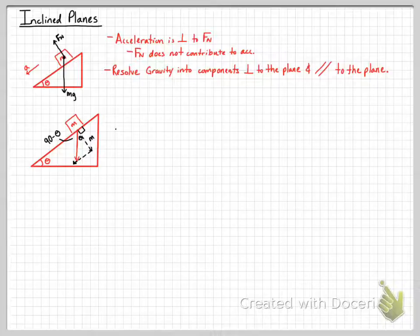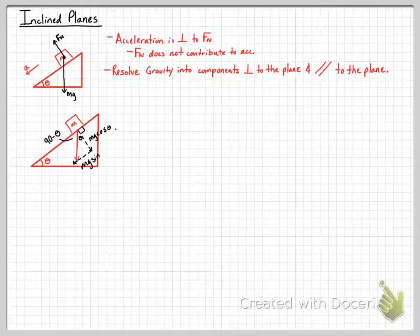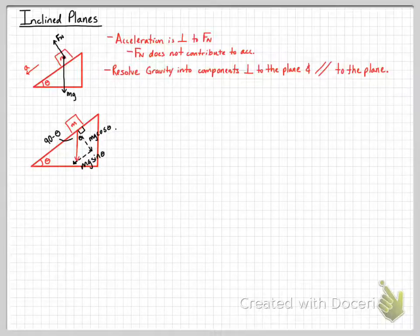Doing a little bit of trig, we recognize that Mg cosine theta is our perpendicular component to the plane, and Mg sine theta is our parallel component — the component along the plane.